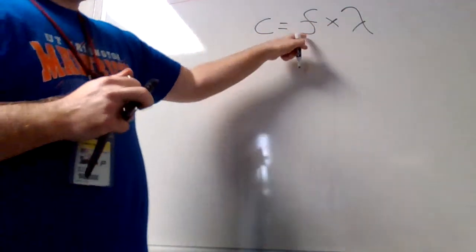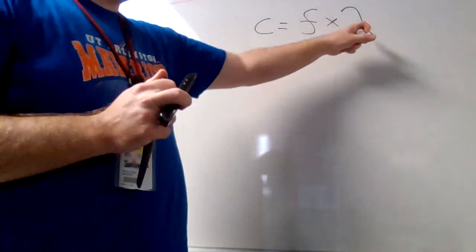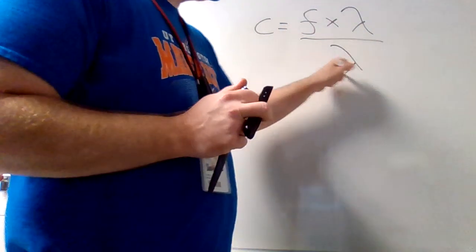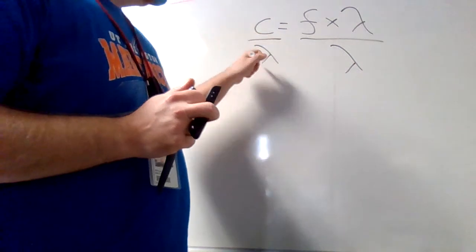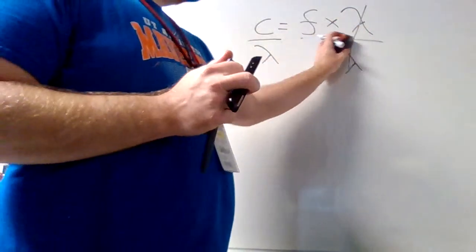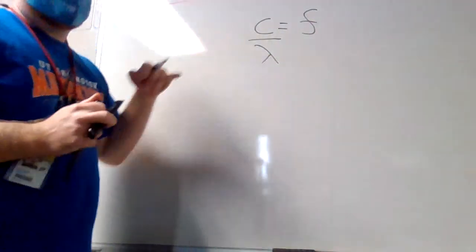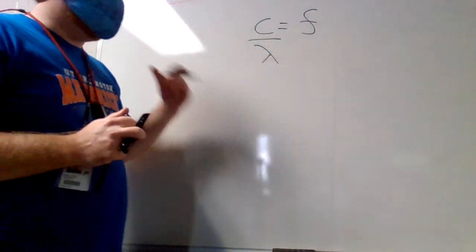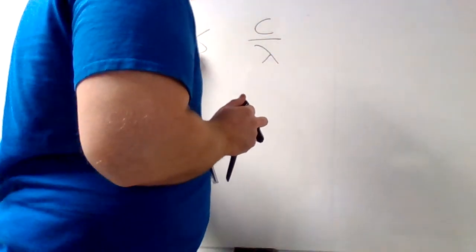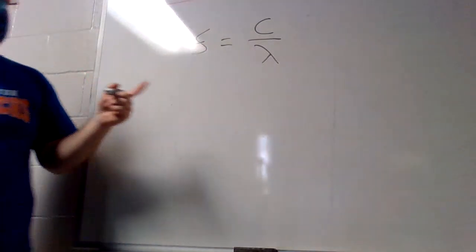To get frequency by itself, I want to divide lambda to the other side. If I divide by lambda on both sides, the two lambdas cancel out and what I get is frequency by itself — frequency equals the speed of light divided by lambda. That's my new formula. Cleaning it up: frequency equals speed of light divided by lambda.